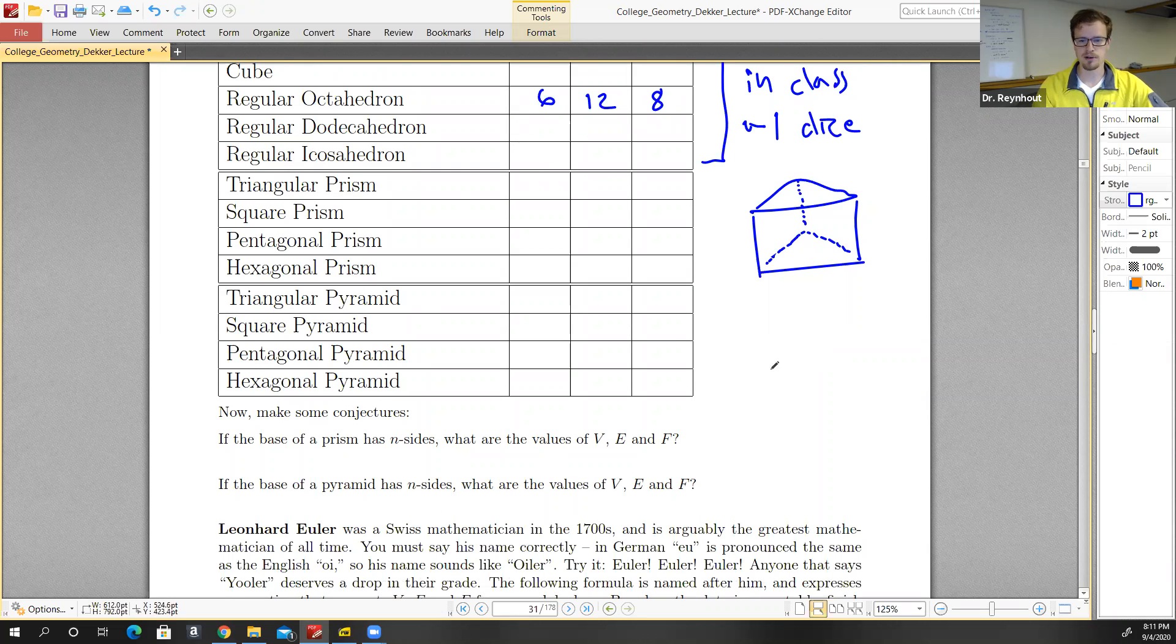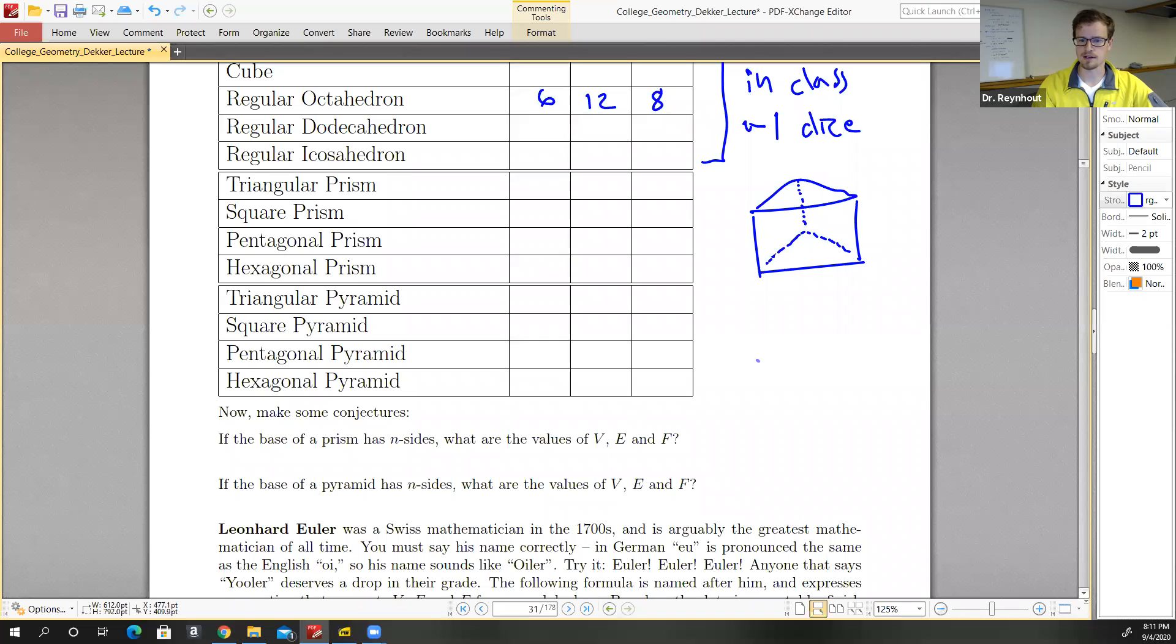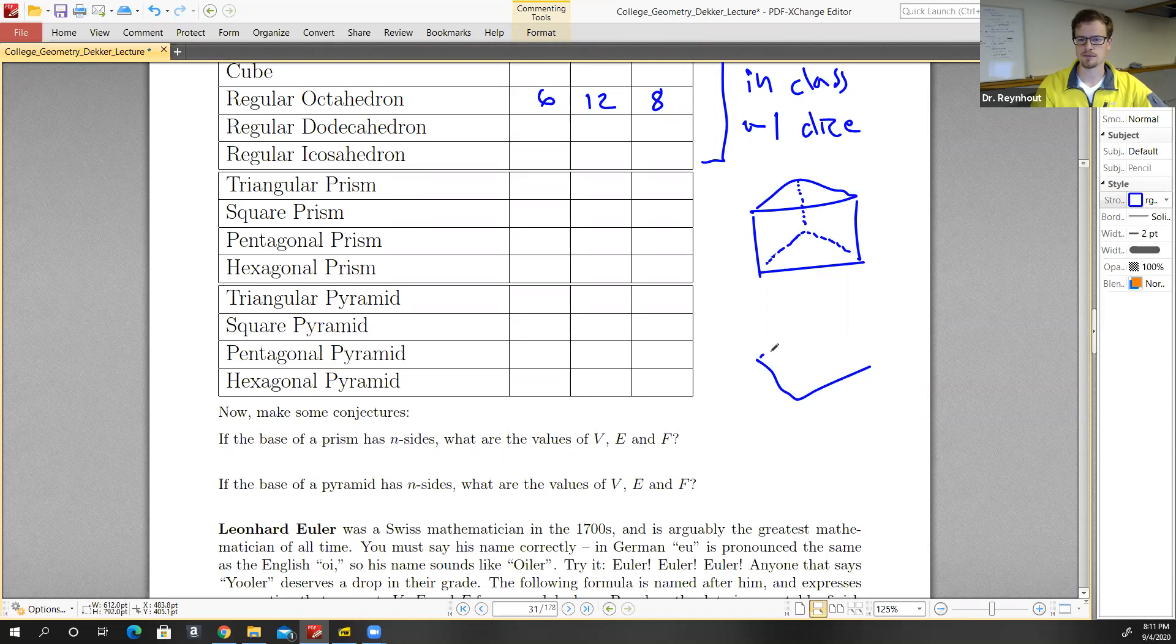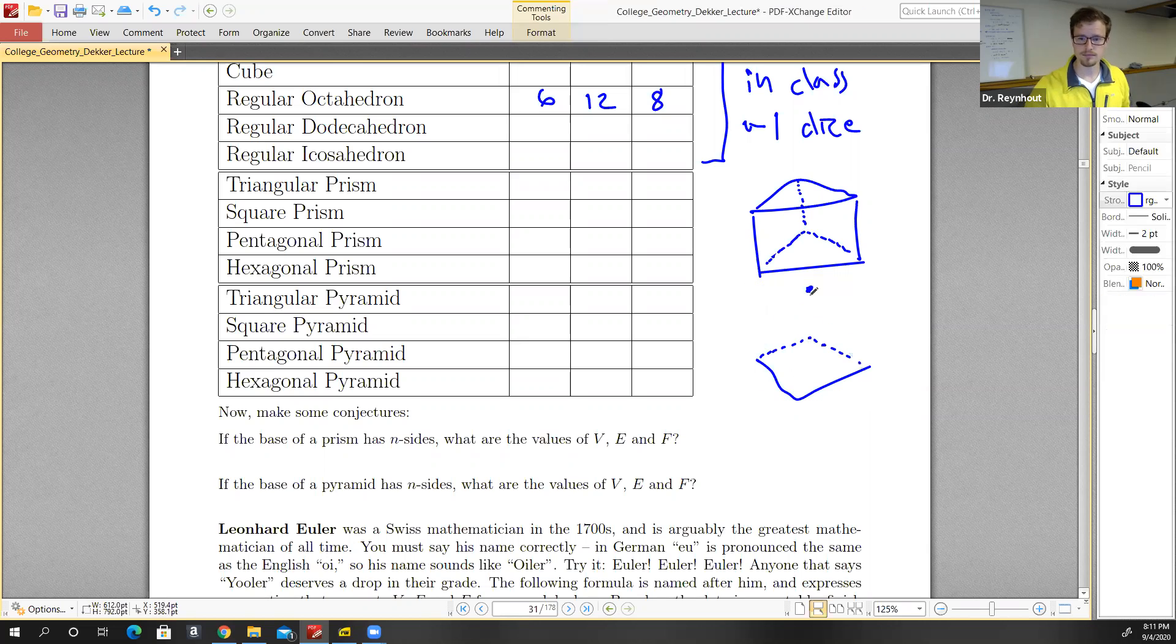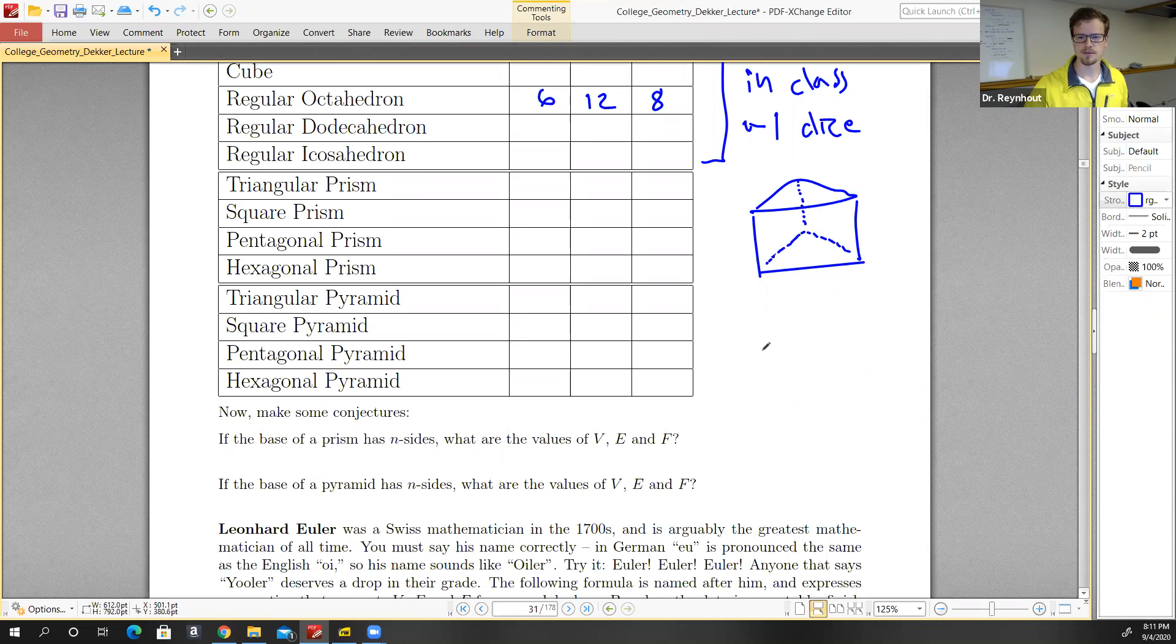And then we can do similarly for the pyramids. So if we wanted a square pyramid, we would have a square base. Then we can't see what's back here. We have the apex. And then we have the edges going down here.